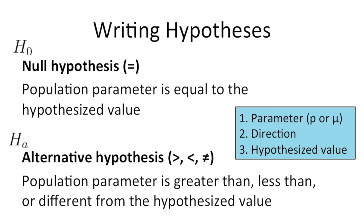To write hypotheses, you need three pieces of information. First, the parameter — are you dealing with a proportion or a mean? If you're dealing with a proportion, your population parameter is P. If you're dealing with a quantitative variable, your parameter is mu, the population mean. Note that the textbook introduces single sample tests, two sample tests, and correlation all in the same chapter. This week and next week, we're just going to focus on single sample tests.